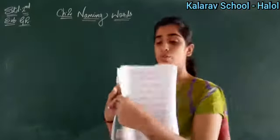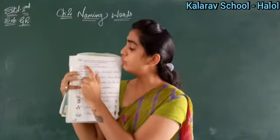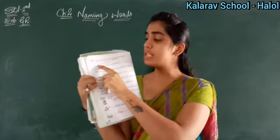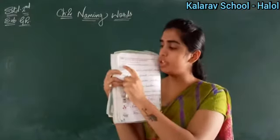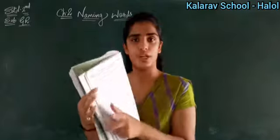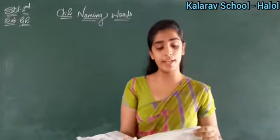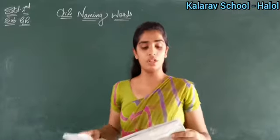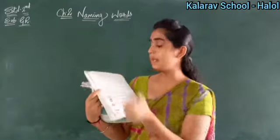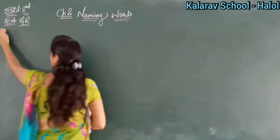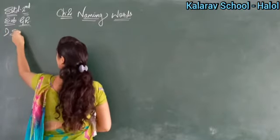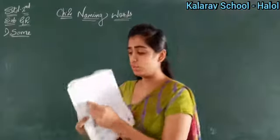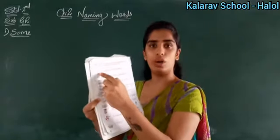In each question there is one underlined word. You have to replace that underlined word with the word given here. For example, in the first sentence: 'There is some ice in the refrigerator.' The word 'some' is underlined, and you have to use 'a lot of' in its place.